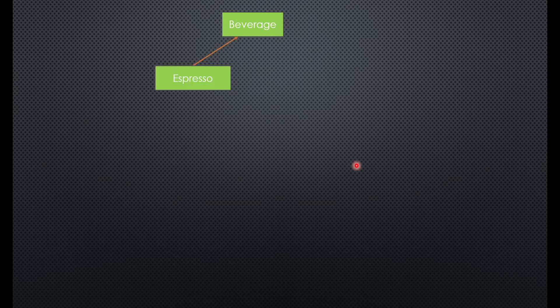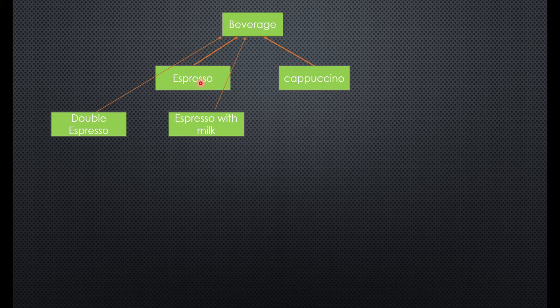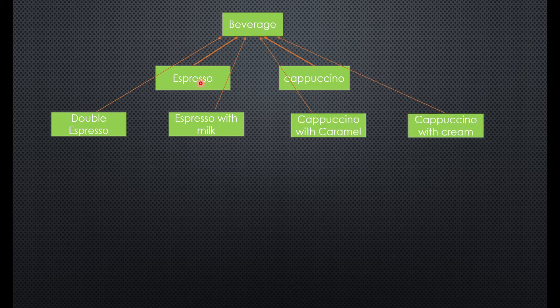Without the decorator pattern, we'd have a Beverage interface or abstract class implemented by concrete drinks like Espresso and Cappuccino as the base drinks. For combinations like espresso with milk, espresso with caramel, cappuccino with caramel, or cappuccino with cream, each would need its own concrete implementation. All these would be concrete implementations of Beverage.